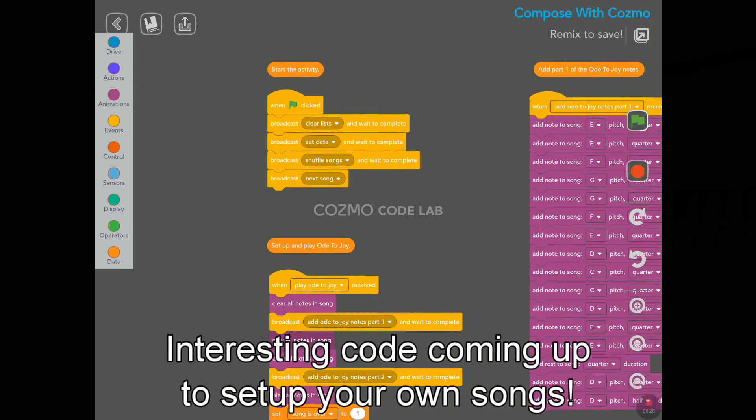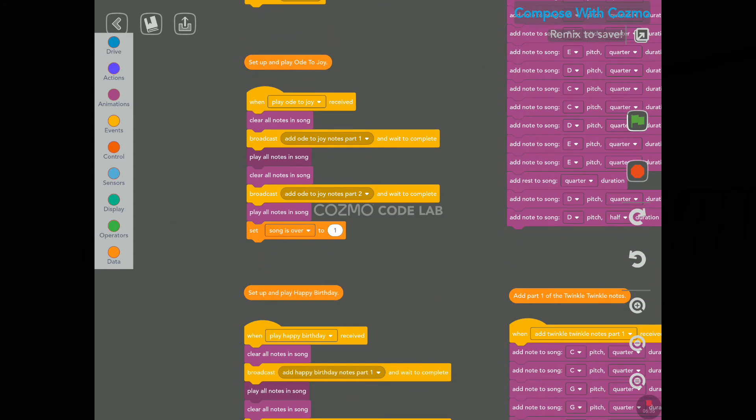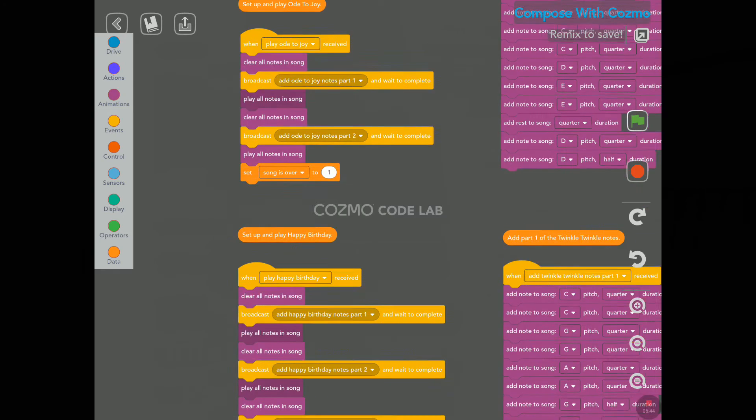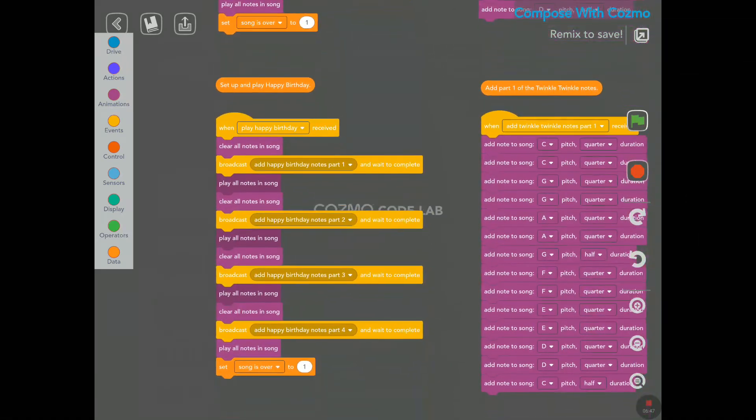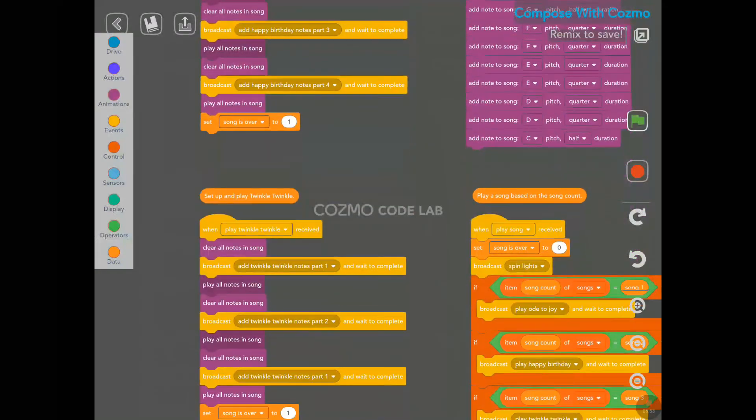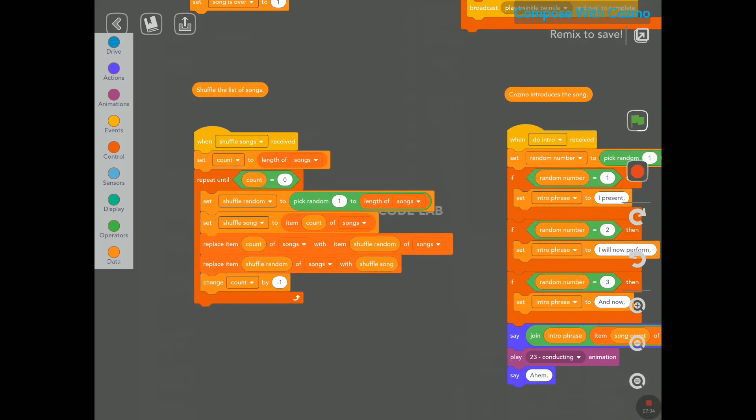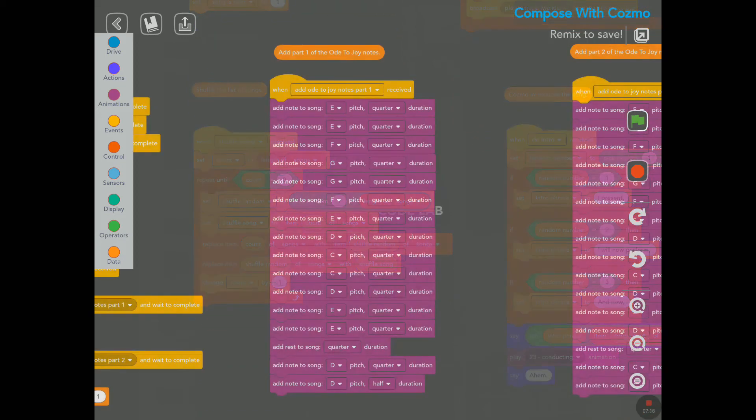We have first here, start the activity. So, broadcasting a few messages. We have set up and play all day to join. I think that's Beethoven, if I'm not mistaken. And that was the second song that Cosmo sing. Set up and play Happy Birthday. That's the first song that he played, or he sang. Set up Twinkle, Twinkle. So, this is the third one that he did. Shuffle the list of songs.